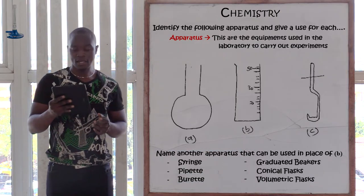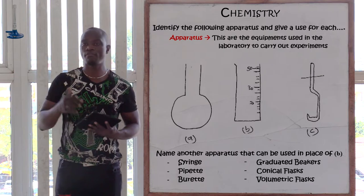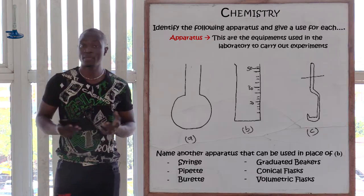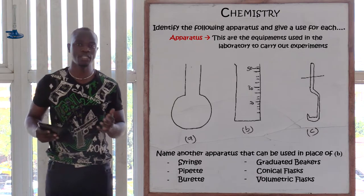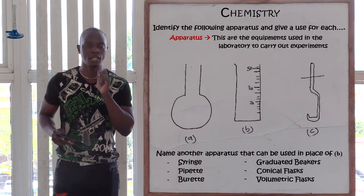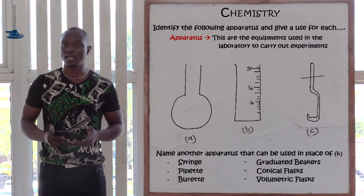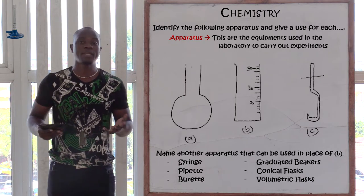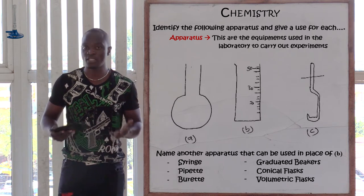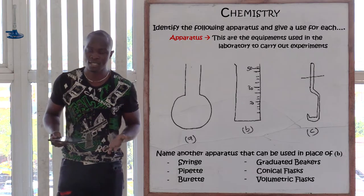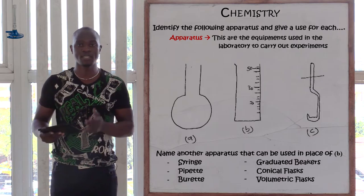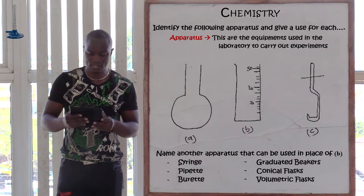Roman 2 is asking: name other apparatus that can be used in place of B. Remember B was the measuring cylinder, used to accurately measure the volume of liquid substances. The other apparatus that can be used to measure liquid substances include: syringe, burette, pipette, and conical flask. Any apparatus that can be used to measure the volume of liquid substances fits as the answer.